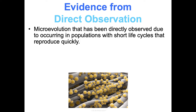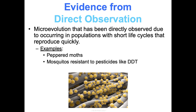Last is evidence from direct observation — microevolution that has been directly observed in populations with short life cycles that reproduce quickly. Humans live a long time and don't reproduce a lot, so we can't observe much. But things like bacteria or fruit flies, which reproduce quickly and in large numbers and have short lives, allow us to see evolution happening in our lifetime. Examples include the peppered moth from the Industrial Revolution, mosquitoes that evolved resistance to pesticides like DDT, and MRSA — a type of antibiotic-resistant bacteria. Antibiotic resistance is a great example of evolution observed in our lifetime. That is your overview of evidence of evolution.